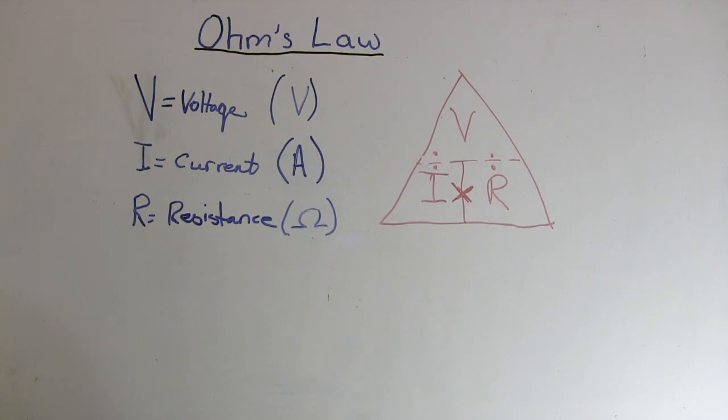Ohm's Law consisting of three values: Voltage, which has the symbol V; Current, which is measured in amps; and Resistance, which is measured in ohms.